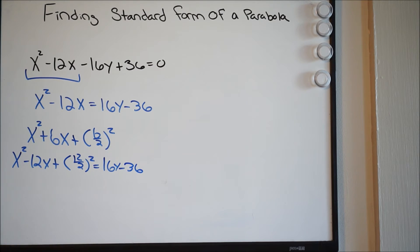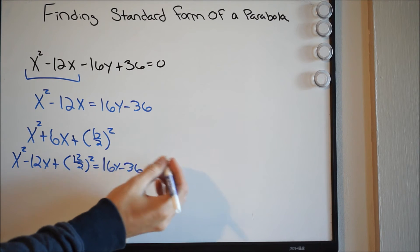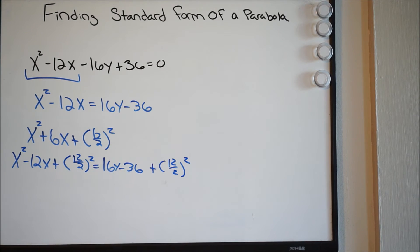And again, what we do to one side, we also have to do to the other. So since I get plus 12 over 2 squared, I also have to do it over here, plus 12 over 2 squared.